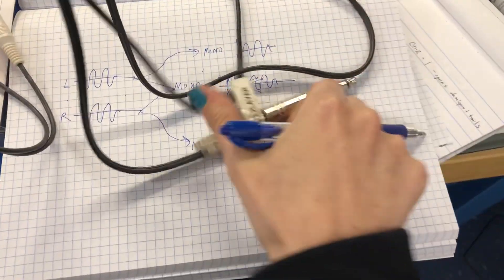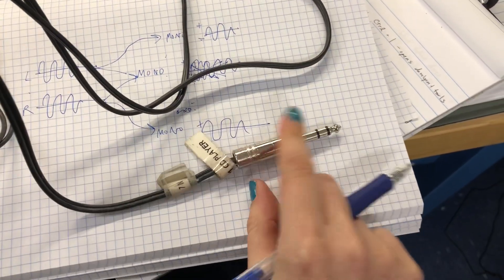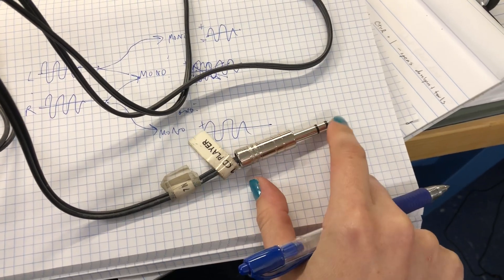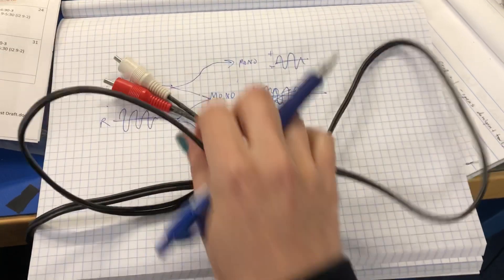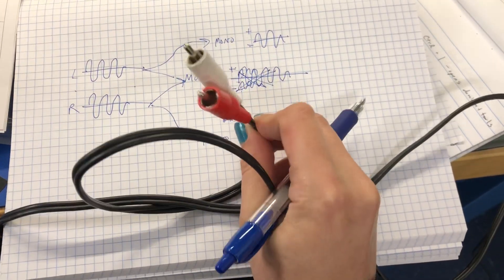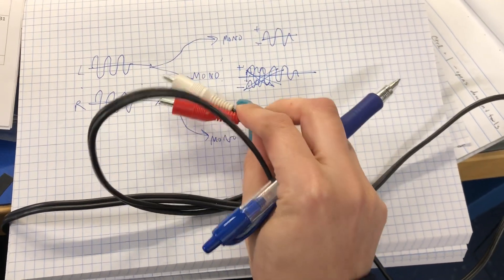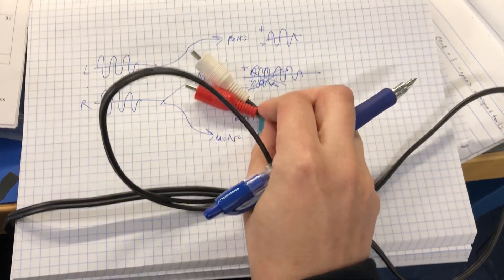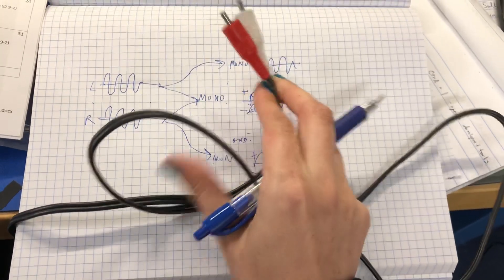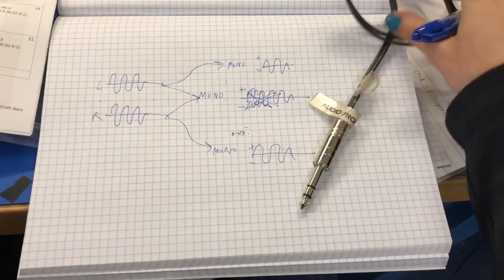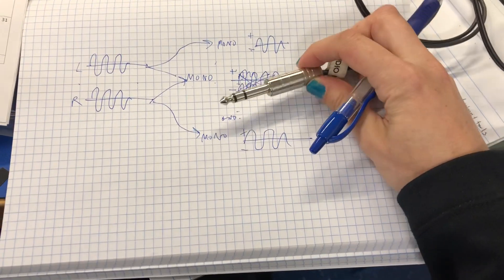So here we have a balanced stereo plug, left, right, and sleeve. And this is going to break out into two separate, this is RCA, but they make these with quarter inch, they make these with XLR, so you would just see two of them on one end, and just the one stereo signal on the other.